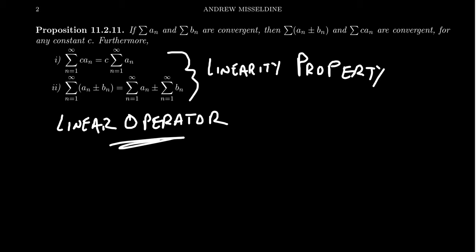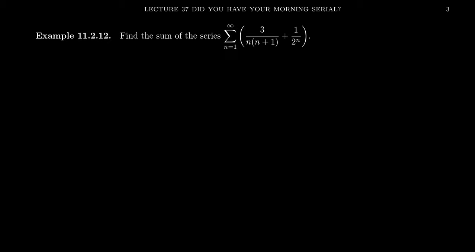I should mention that it's very important that in order for these properties to hold, we are assuming that the two series are convergent on their own. Because it turns out that if you're not careful, you can combine two divergent series by addition and subtraction and actually form a convergent series. So for these linear properties to hold, we are assuming that all the series are convergent on their own.